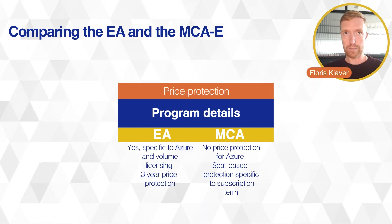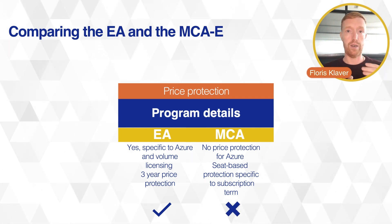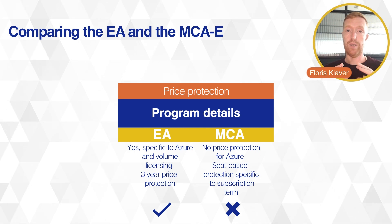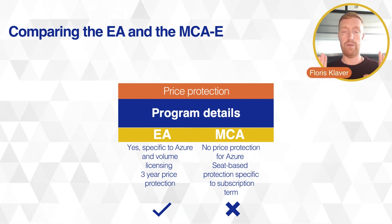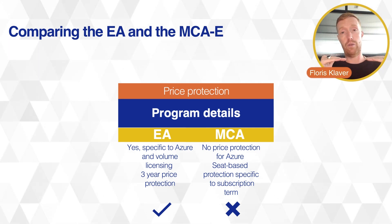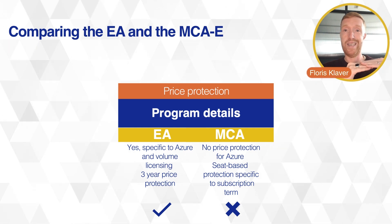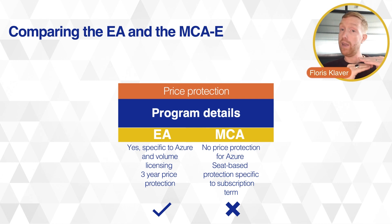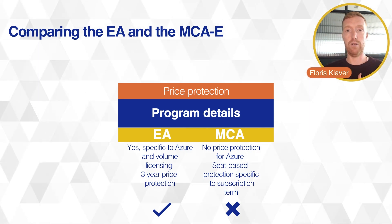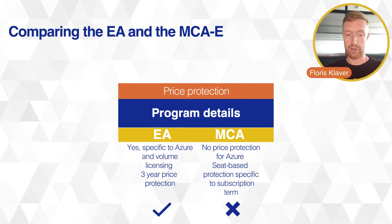One of the main things in the Enterprise Agreement was always three-year price protection. You signed a customer price sheet locking in the products and associated prices for the full three-year term. For Azure specifically this was very important — the prices of Azure services could not go higher throughout the three-year term, but they could go lower. Upon renewal you would then be faced with any pricing uplifts.